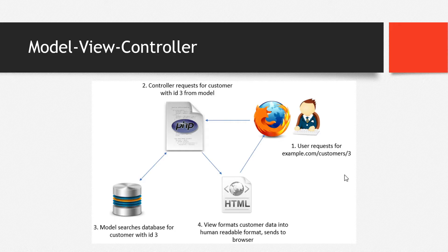That's the basic flow of MVC. As you will notice, there is no direct connection between the model and the view — it always goes through the controller. This is because the controller is the intermediary between the model and the view, serving as the bridge between these two resources.